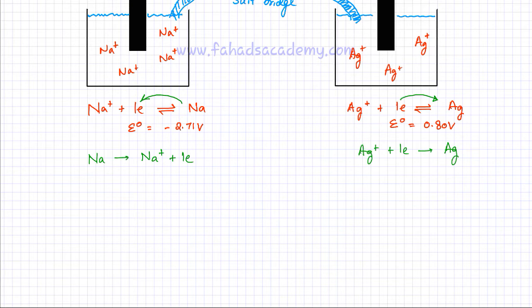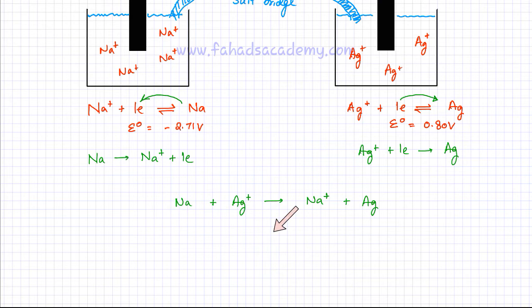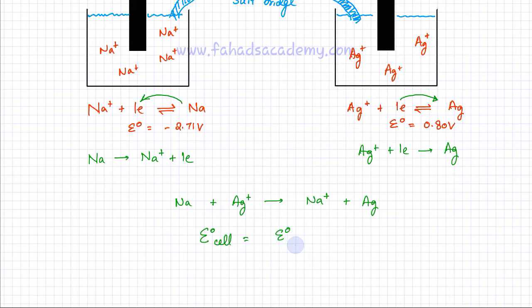Adding the reactants and products gives you the overall equation, which in this case has sodium on the left-hand side along with silver ions, and on the right-hand side you have sodium ions and silver atoms. The electrons cancel each other out, so this is your complete equation for the electrochemical cell. Another thing that is often asked is for the E0 cell — the overall cell voltage. The E0 cell is the E0 for reduction minus E0 for oxidation. Or stated another way, it's basically the potential difference between the two electrodes.